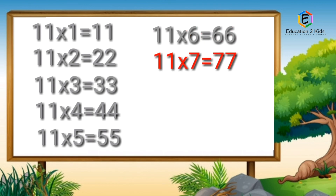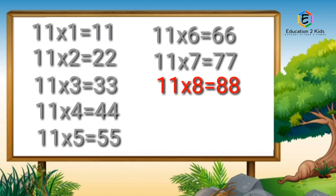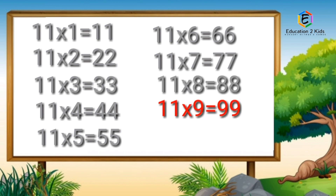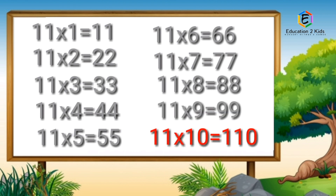Eleven sevens are seventy-seven. Eleven eights are eighty-eight. Eleven nines are ninety-nine. Eleven tens are hundred-ten. Thank you.